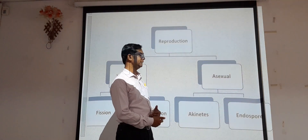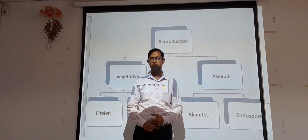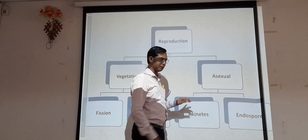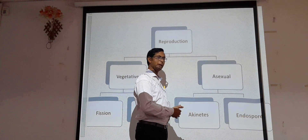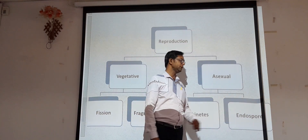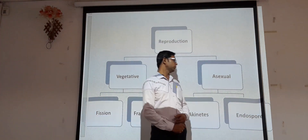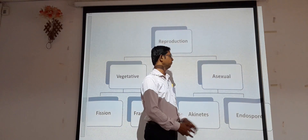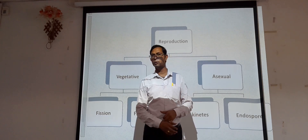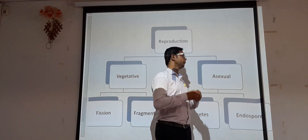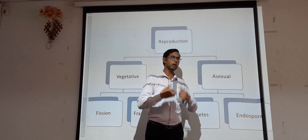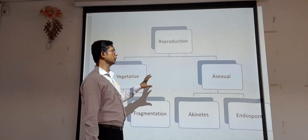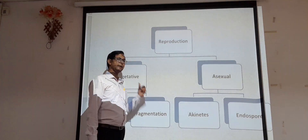Asexual reproduction is done by two important structures. One is akinetes — cells developed from normal cells with a thick coating that separate from the parent cell and act as a new plant body under favorable conditions. The other is endospores, produced under unfavorable conditions, which germinate into new individuals when favorable conditions return. Asexual reproduction in Chlorophyceae mostly occurs during unfavorable conditions.